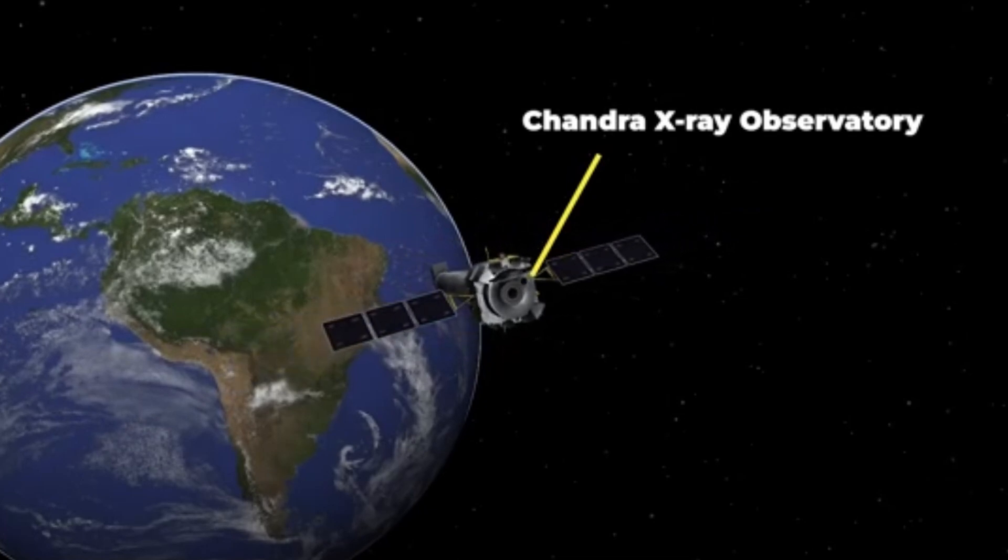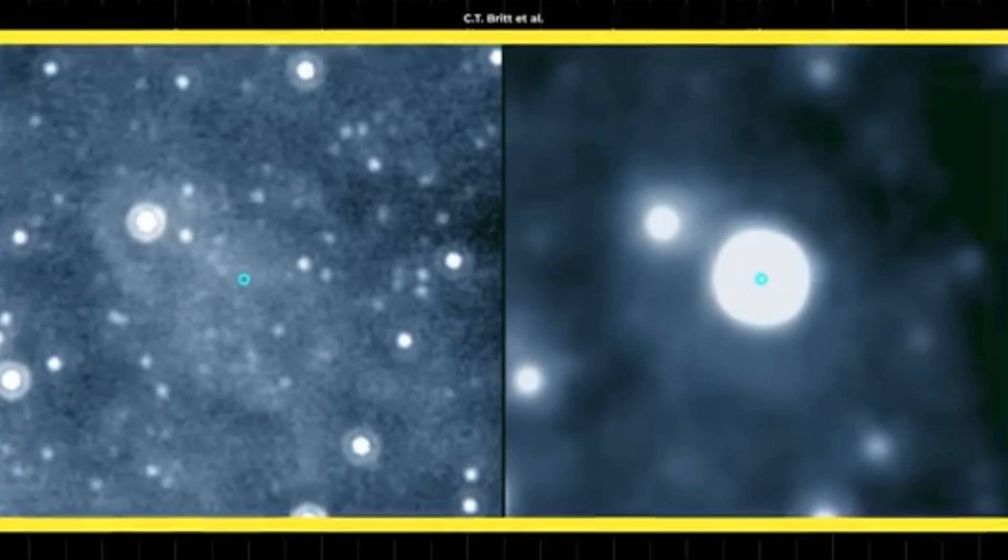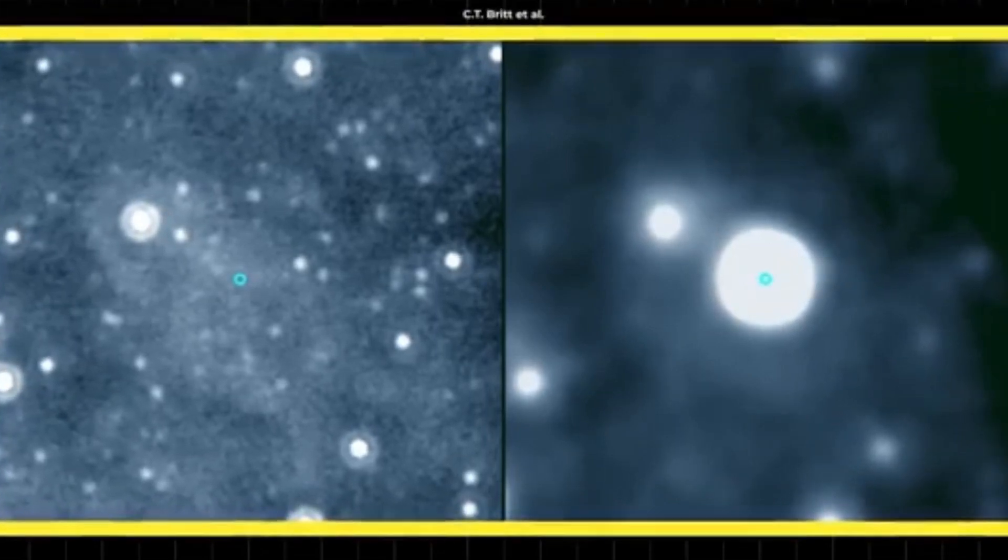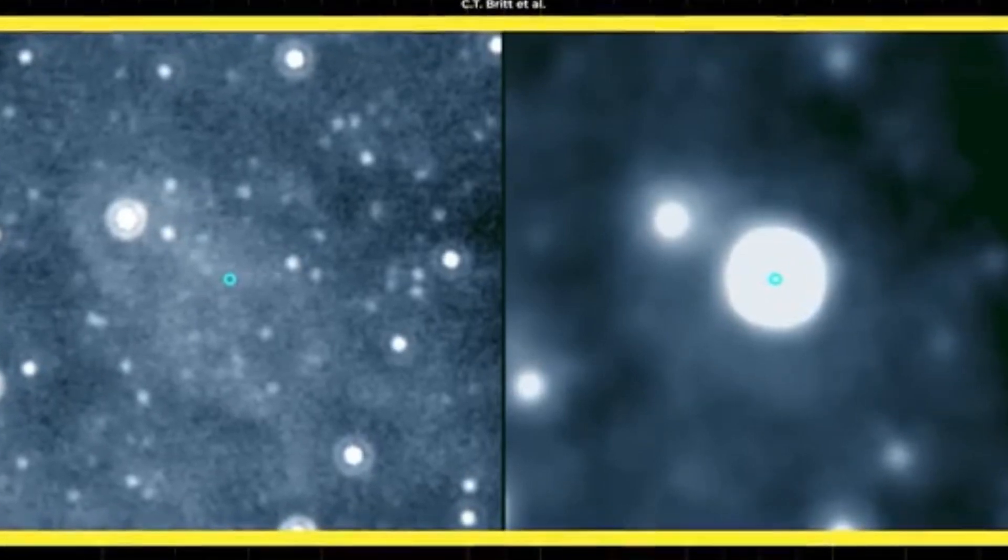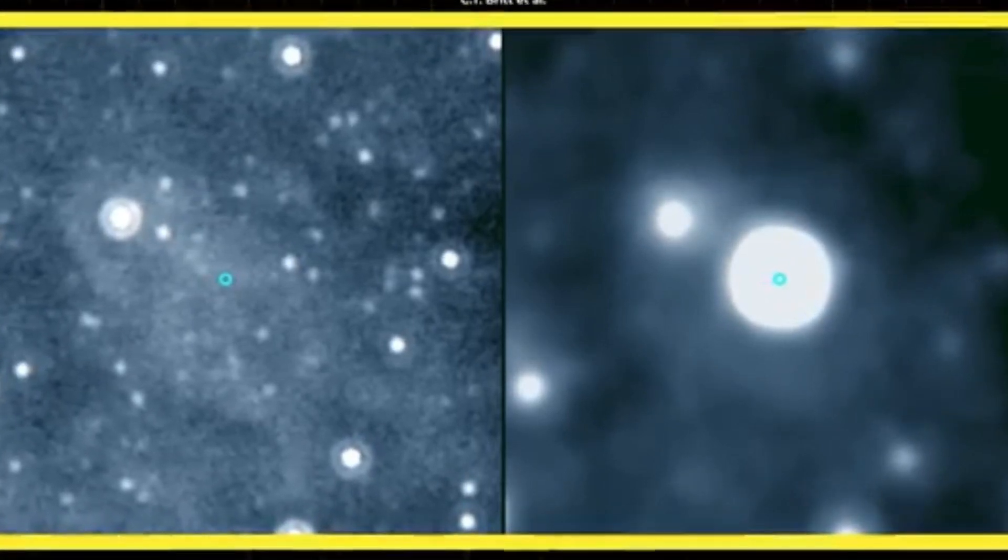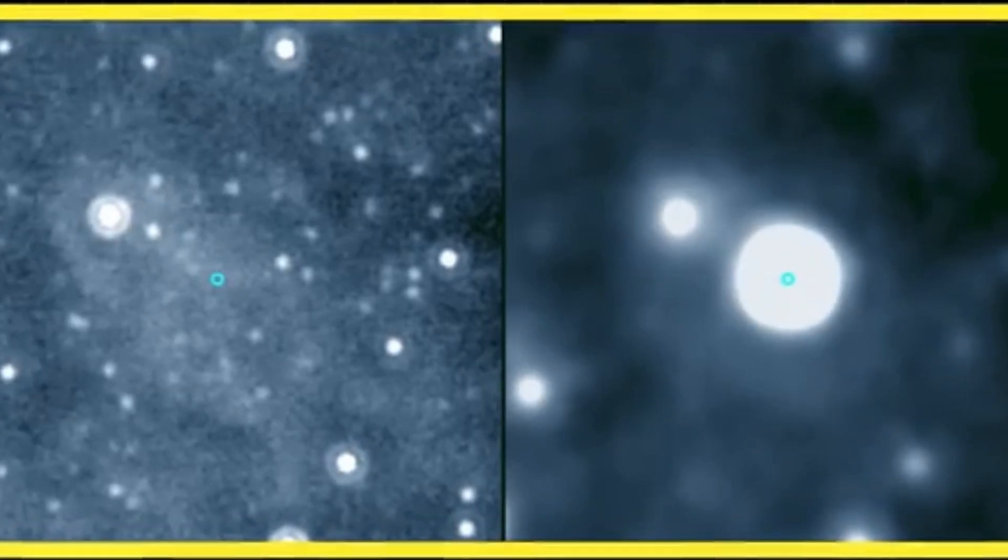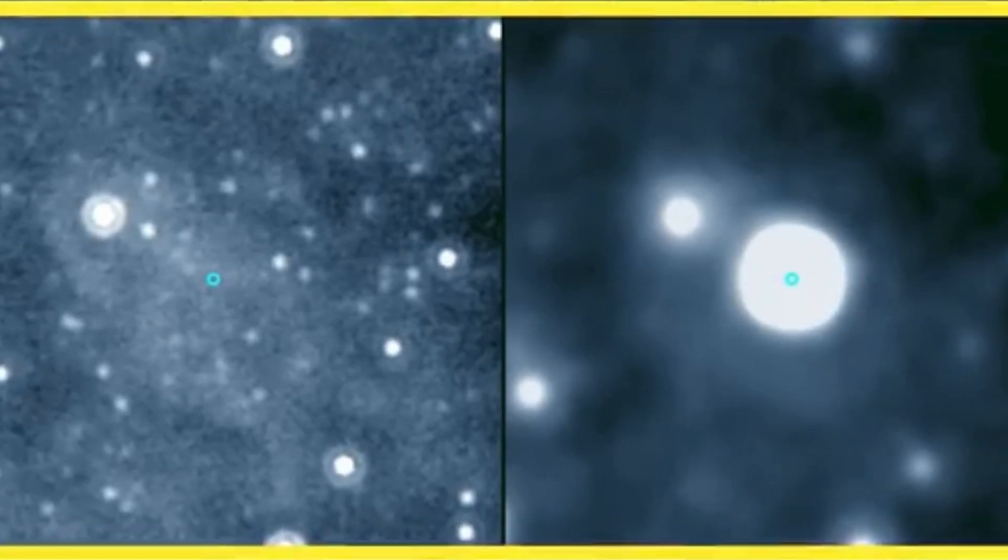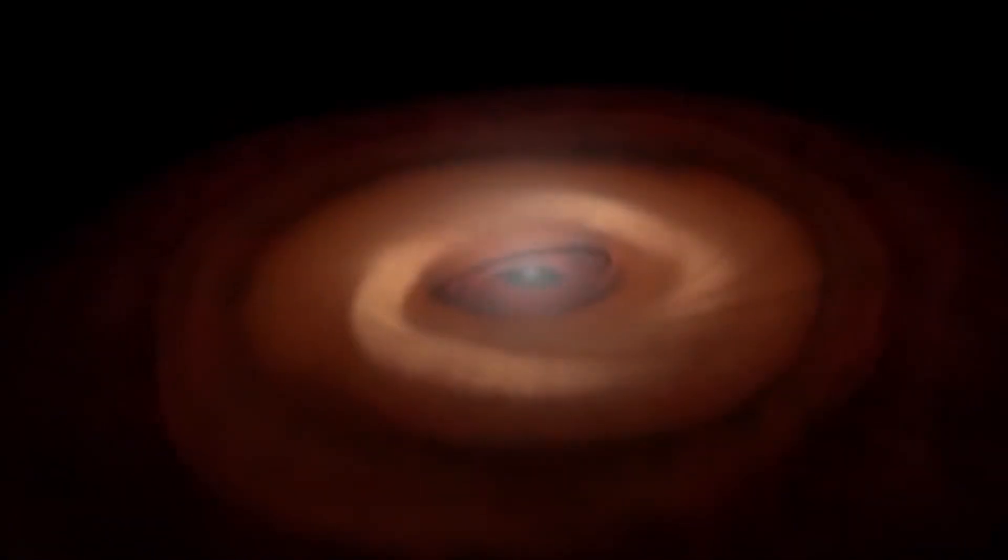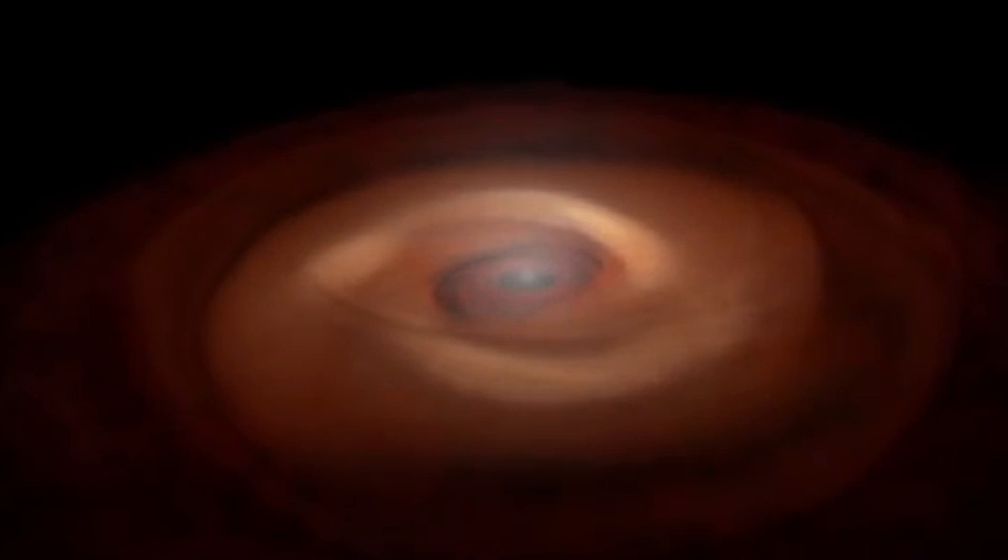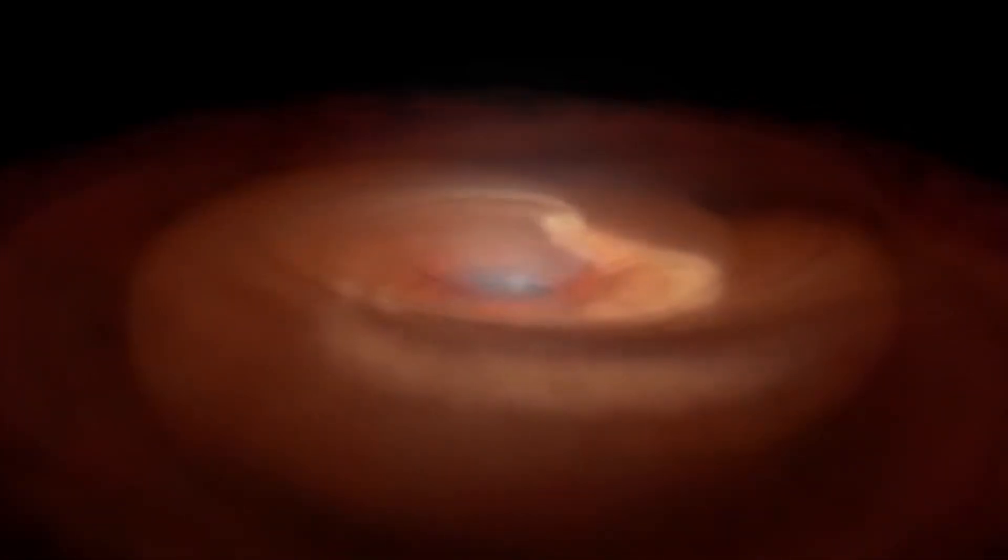CX 330 is surprisingly bright, especially given its isolated location. The star is also in a rapid growth phase, something we usually see in much younger stars, typically found in dense star-forming regions. CX 330 is throwing off an unusual amount of energy, particularly in the form of X-rays. This kind of behavior is more typical of stars that are still gathering material from their surroundings, growing in size and mass. But the big question is, what is it feeding on out there in the middle of nowhere?